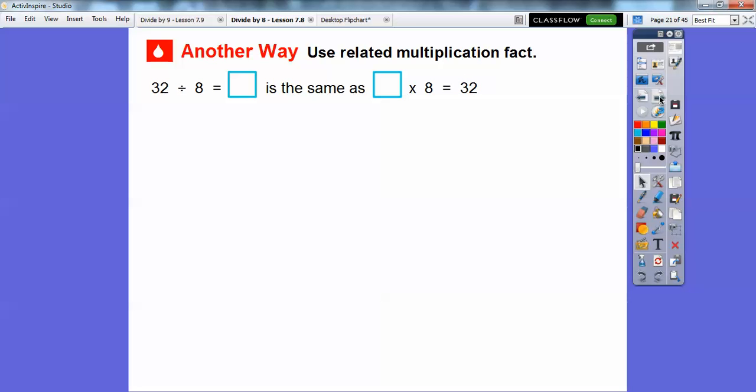So another way we can use a related multiplication fact. So 32 divided by 8 equals blank is the same thing as that blank number times 8 equals 32. We can just reverse it around. This 8 times whatever this number is is going to equal that 32. Well, now we know it's 4. So we can think what number completes the multiplication fact. Well, 4 does. 4 times 8 equals 32. So if you know your multiplication facts, it's the inverse relation or the opposite relation of division. So 32 divided by 8 equals 4.